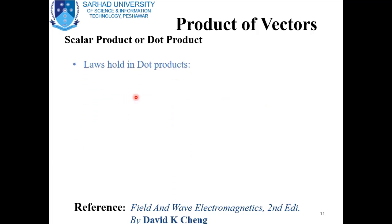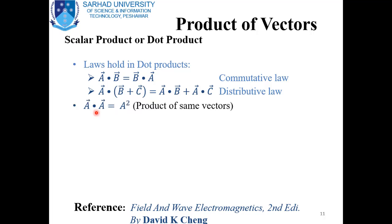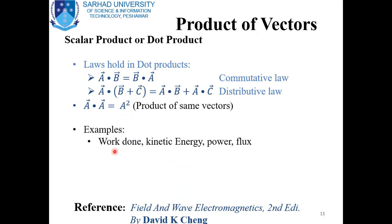The dot product is commutative: A·B = B·A. The distributive law also holds: A·(B + C) = A·B + A·C. A·A gives the square of the magnitude. Examples of scalar physical quantities that arise from dot products include work, kinetic energy, power, and electric and magnetic flux.